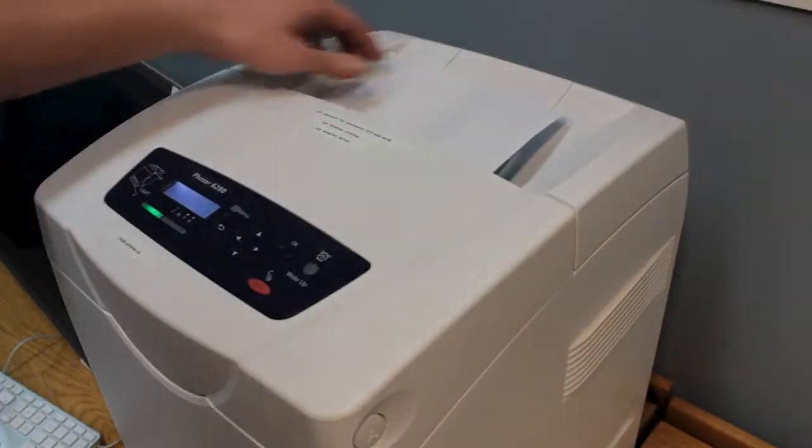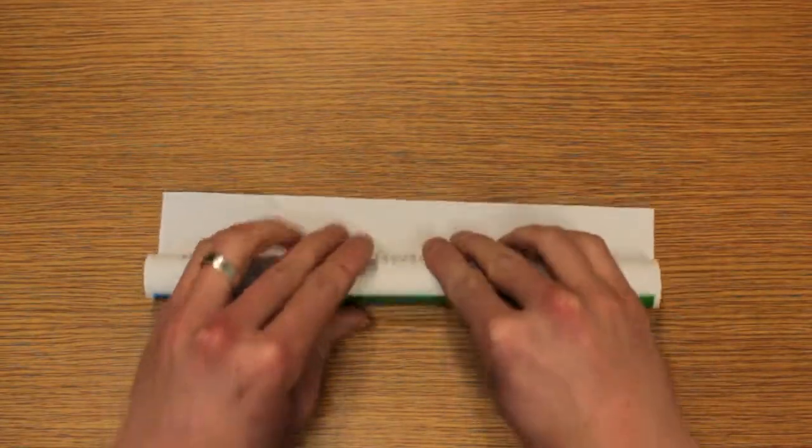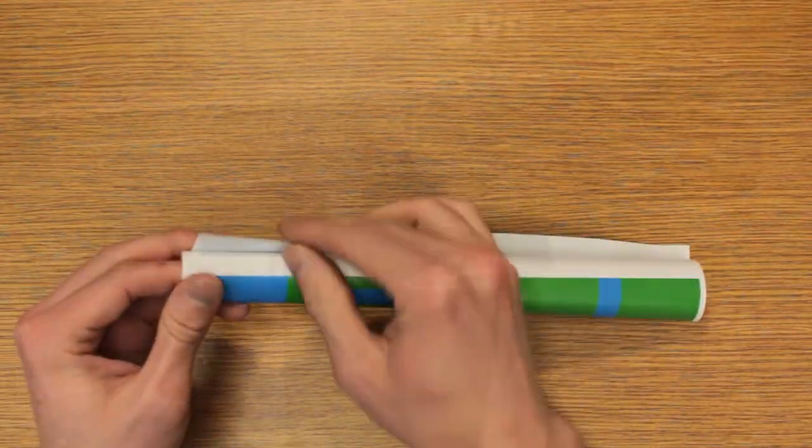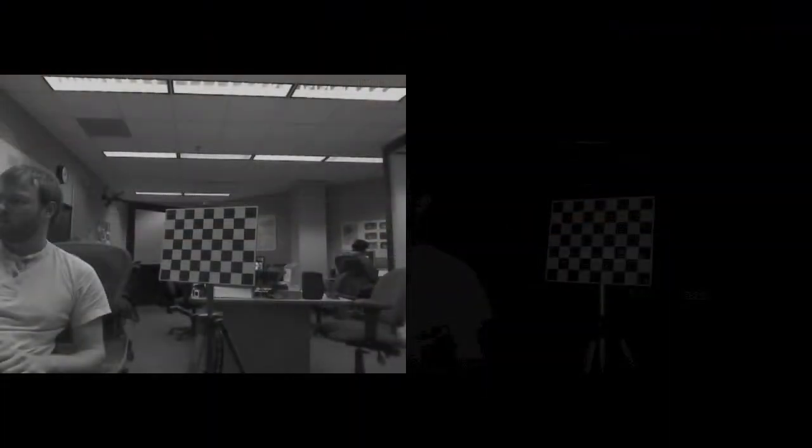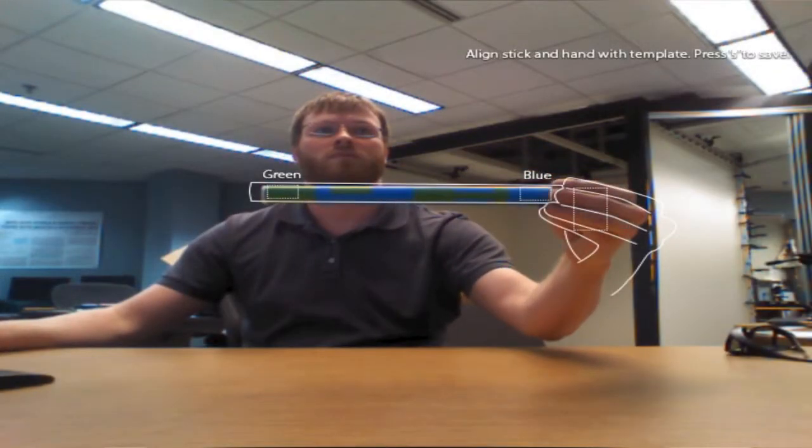In keeping with our goal of a lightweight, accessible system, we use materials that are already found in an office to create interaction props that are tracked using a depth-sensing camera. To work accurately with this low-cost sensor, we register the color and depth images and perform a 30-second, user-specific calibration.